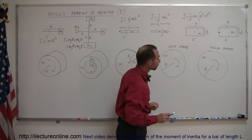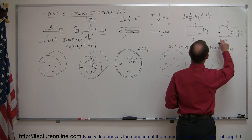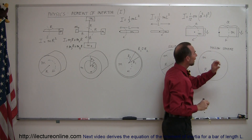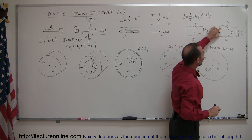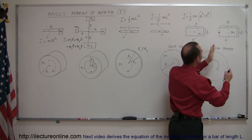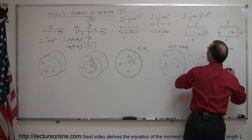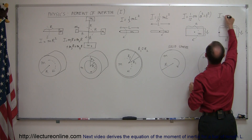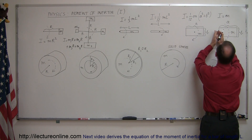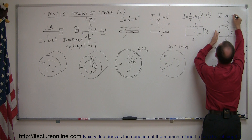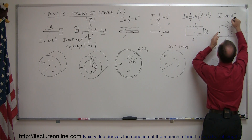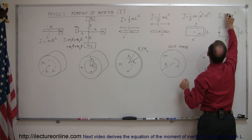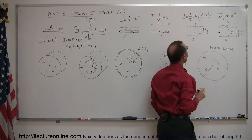Moving on, if we rotate that same plank about a point at its very end, the width of the plank in the short direction doesn't matter — only the length in the long direction. So it becomes just like the thin bar case: I equals one-third MA squared, I = (1/3)MA².